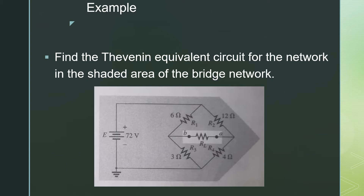In this example, we have to find the Thevenin equivalent circuit for the network in the shaded area of the network. We have to find the Thevenin equivalent circuit between these two points A and B.